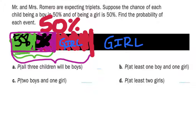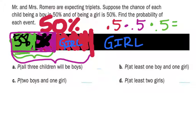So how do we figure this out? We started out with 50%, then we took 50% of that, and then 50% of that. So when we multiply all these together, we will have the probability that all three children will be boys. If you did that, you'd get 0.125 — as a fraction, you'd get 1/8.